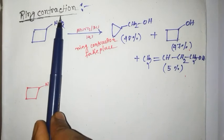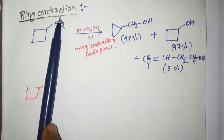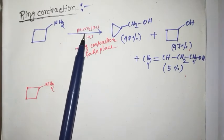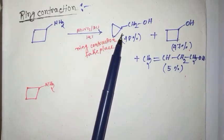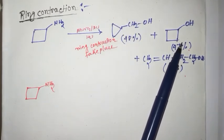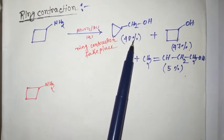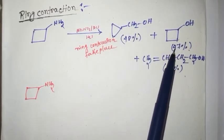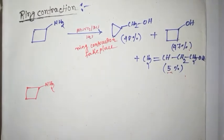Now, let's discuss ring contraction. Here, cyclic primary amine when treated with NaNO2HCl, we get three different products. This product is 48%, this product gives 47%, and this product gives 5%.